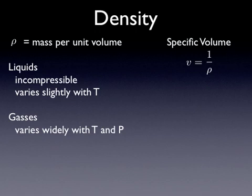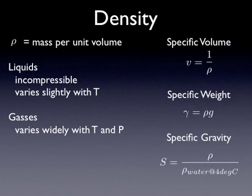There are a number of different parameters we can use to describe this concept of density. One is specific volume, which is mathematically just the inverse of density — we won't use that too much. Specific weight, which we'll use quite a bit, is defined by the Greek letter gamma and equals density times the gravity constant. Specific gravity, also used quite a bit, is described by the capital letter S and is the density of the fluid you're working with divided by the density of water at 4 degrees Celsius. Specific gravity is useful because if it's less than 1 you'd expect the object to float, and if it's greater than 1 you'd expect it to sink.